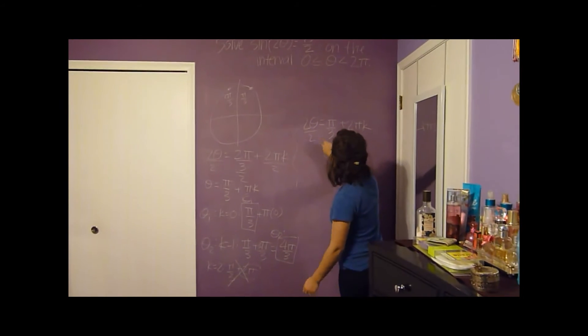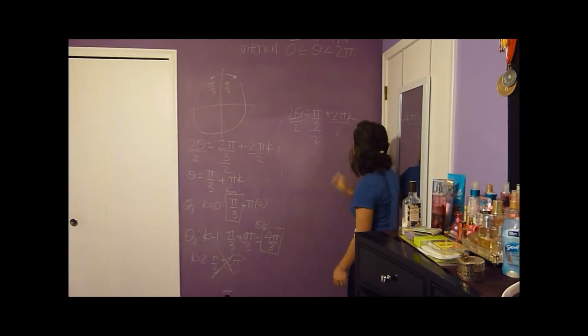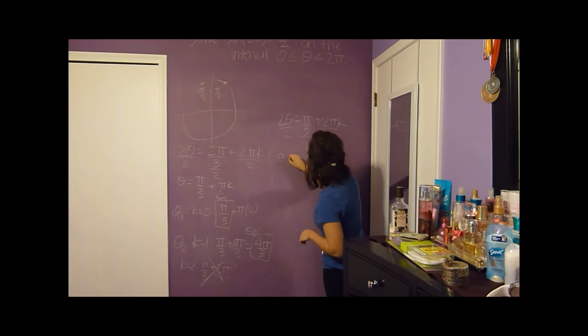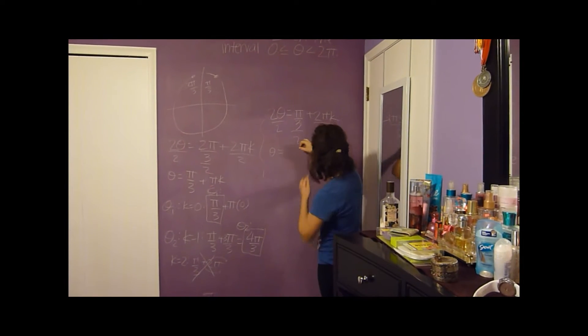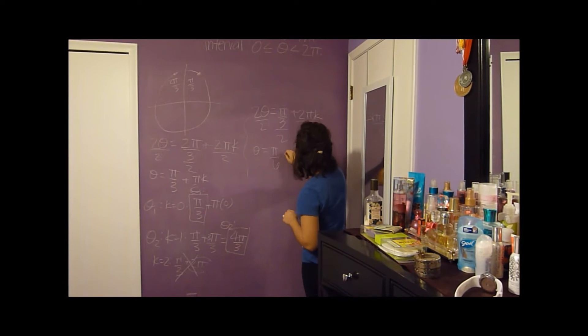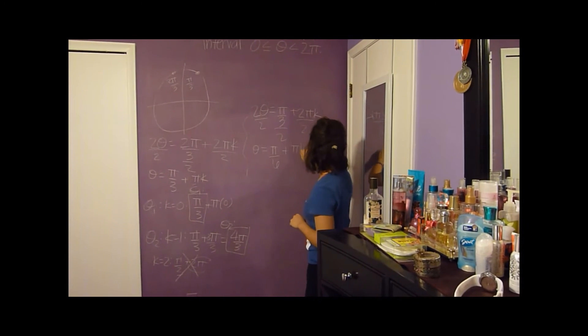For this one, same thing, you're going to divide. You're going to get theta equals pi over 6 plus pi k.